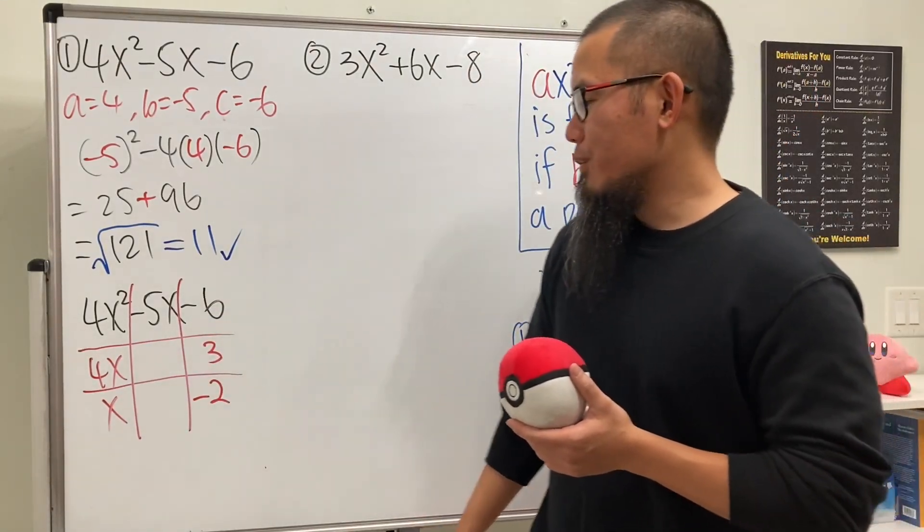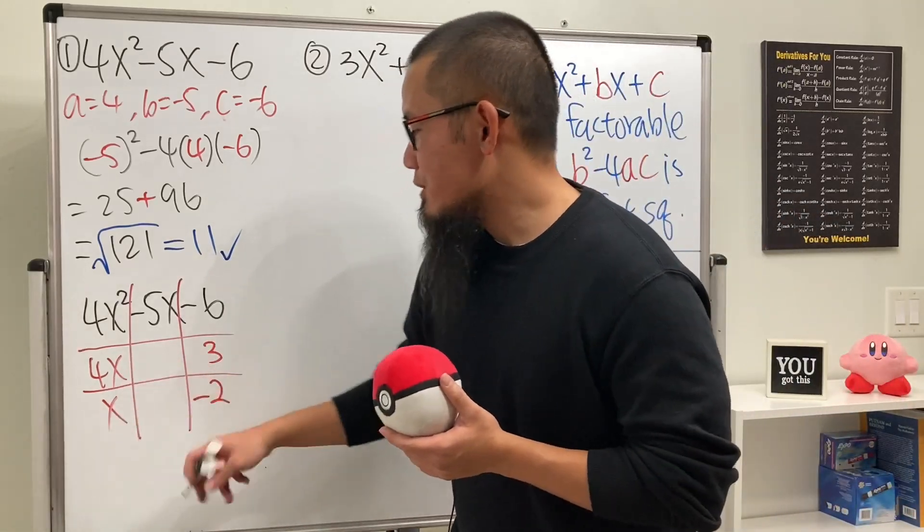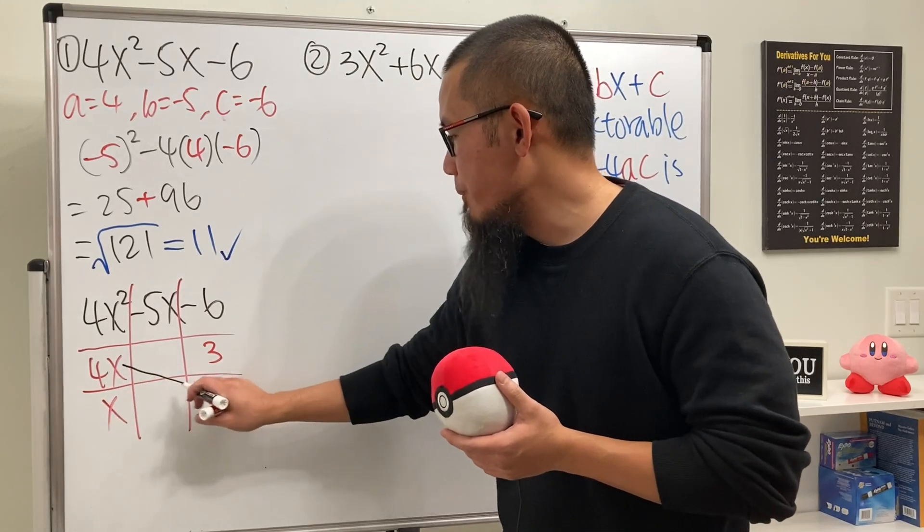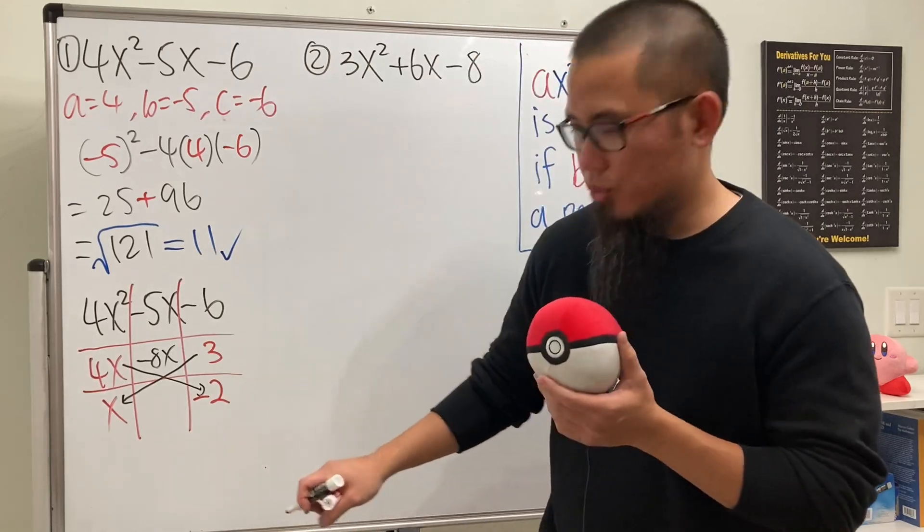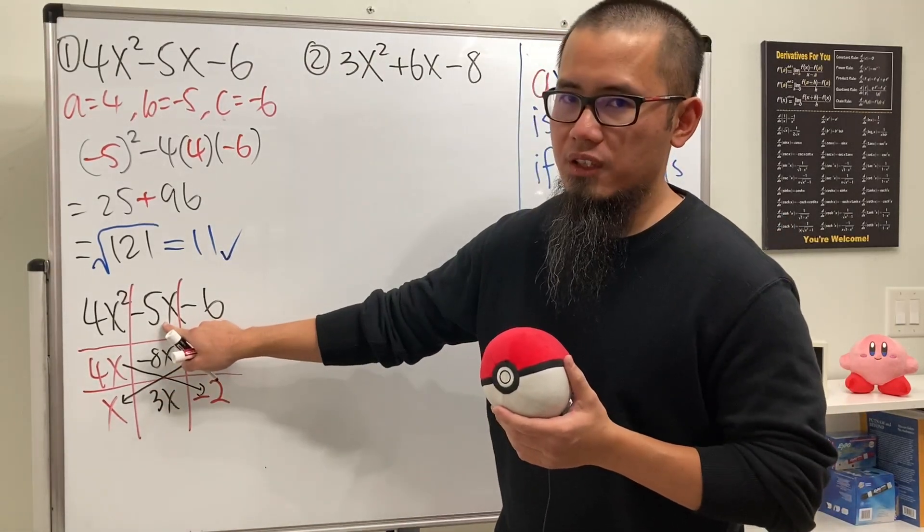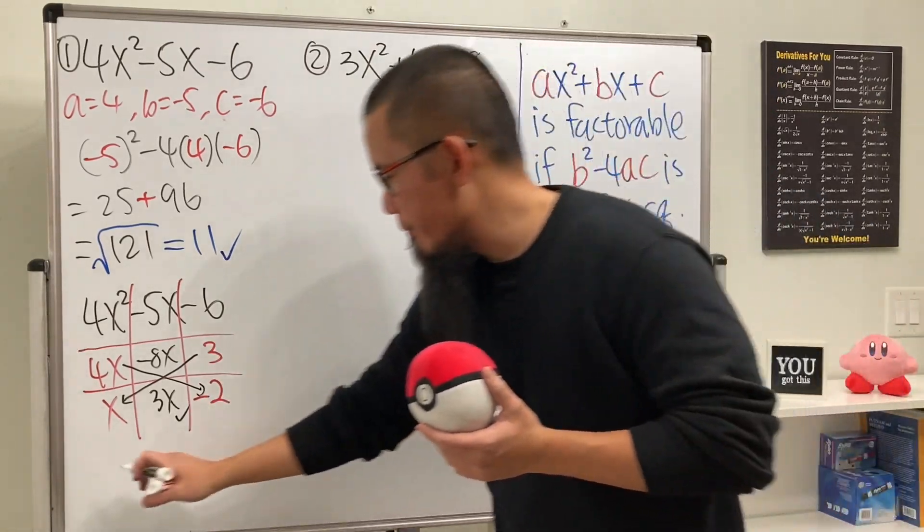How do we know that? Well, I did this so many times before, to be honest. But anyway, let me just convince you guys this is the correct combination that we want to use. Because if you do 4x times negative 2, we get negative 8x. And then we do 3 times x, we get 3x. Together we do end up with negative 5x. So this is the correct combination.